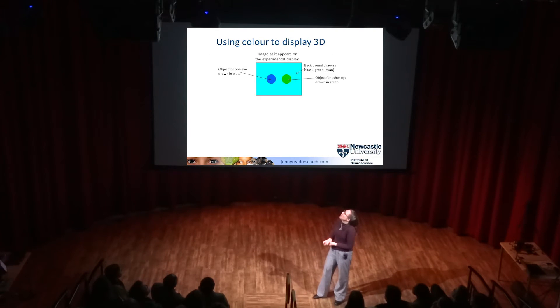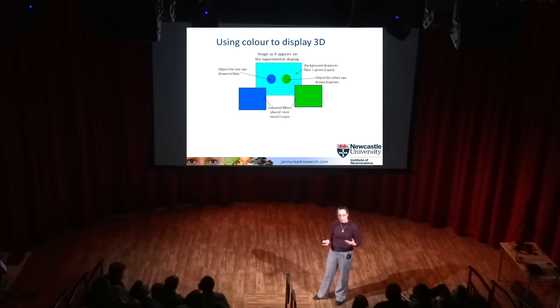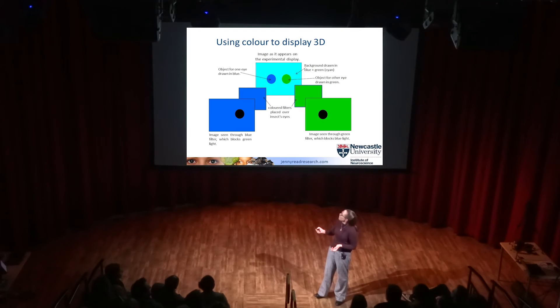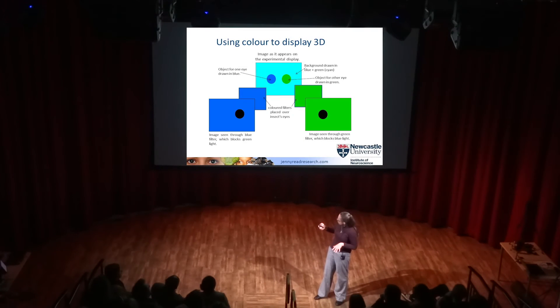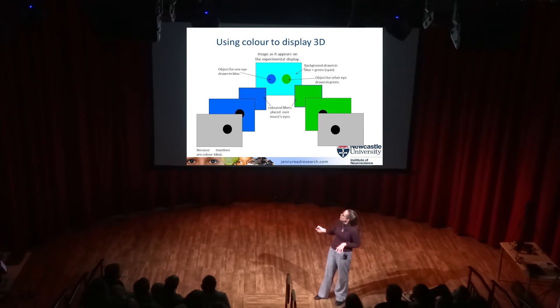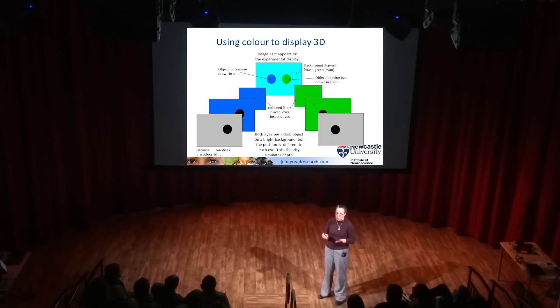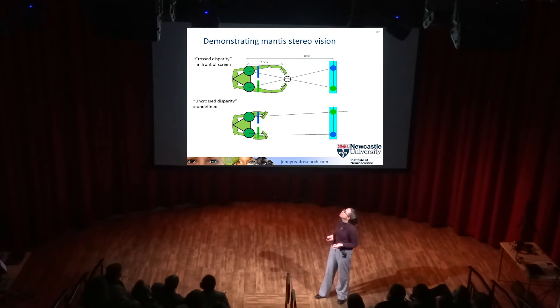When you view through old-style 3D glasses it looks a mess because you're aware of one eye seeing blue and one eye seeing red - that's why they're not used in cinemas anymore. But for mantises they should be just fine. In our experiments, we put up an image on a computer screen with a target - a little simulated fly - drawn in blue for one eye and green for the other. The filter only lets through the blue light and blocks the green, so the green dot appears as a black hole where there is no blue light. The animal is colour blind so it doesn't perceive the colour difference - it just sees two different positional images, giving it a disparity.